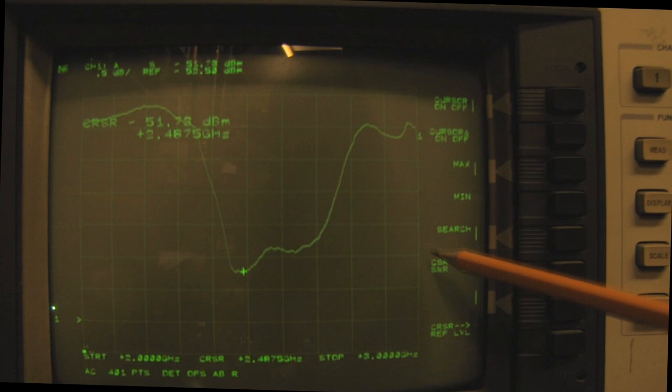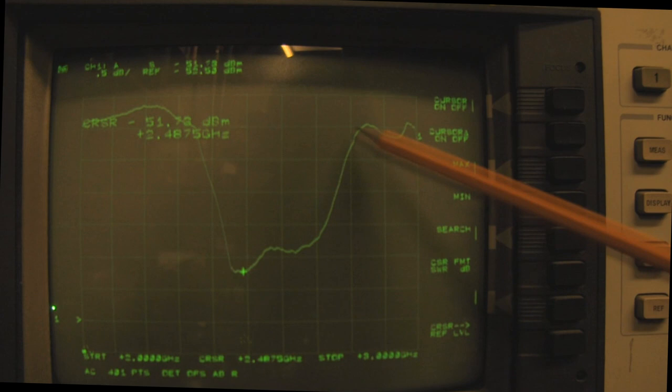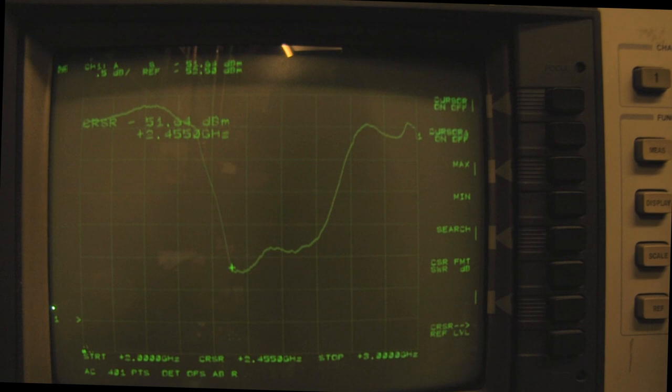Here we are looking at the 2.4 gigahertz frequency response. We're scanning from 2 gigahertz over here up to 3 gigahertz over here. We've got this lovely dip right in the middle of the 2 gigahertz spectrum there. If I move the cursor, we've got 2.44 gigahertz going down to 2.47 gigahertz, 2.50 gigahertz.